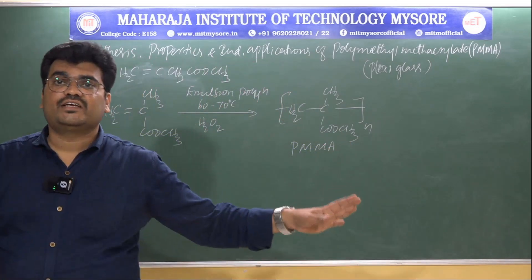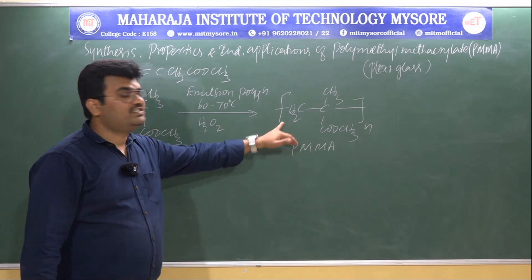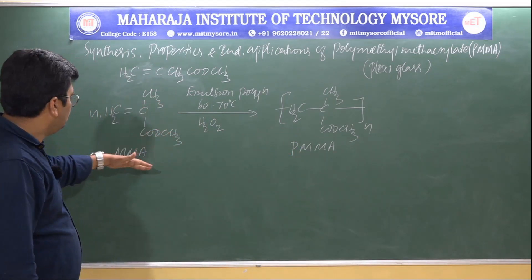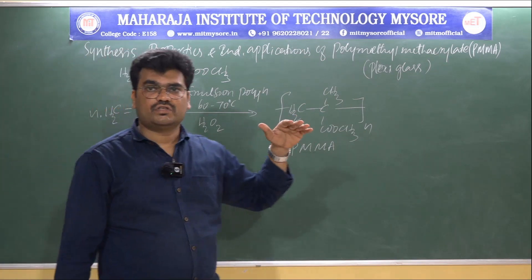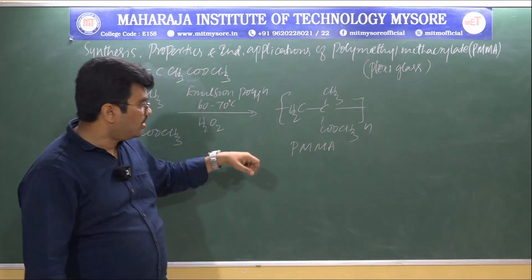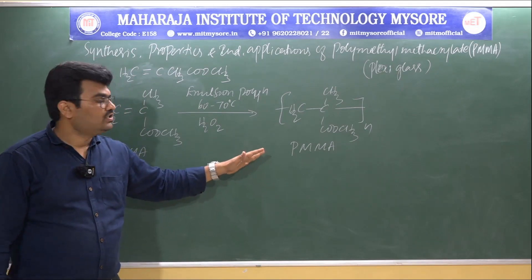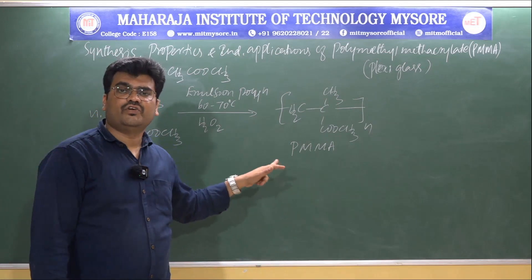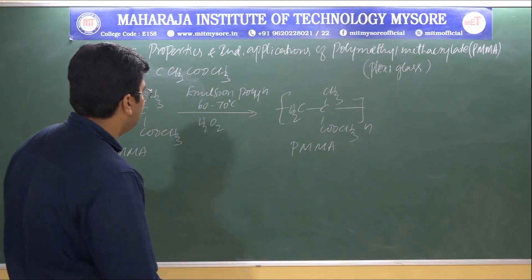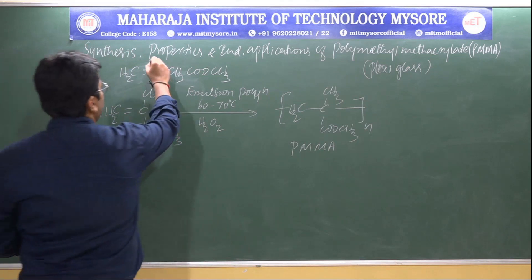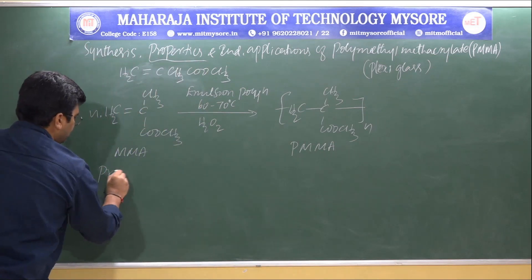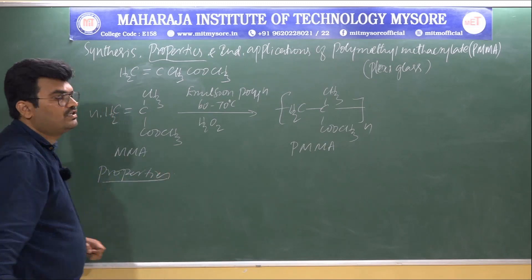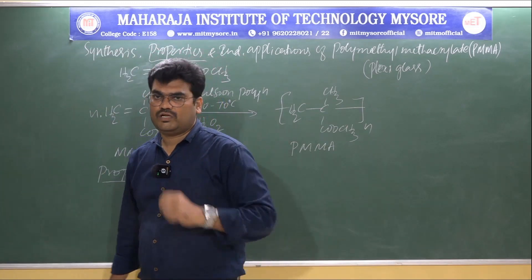PMMA is a transparent and very hard thermoplastic polymer. It softens at 120°C and exhibits very good mechanical properties. The first property is that it is an amorphous and transparent thermoplastic.